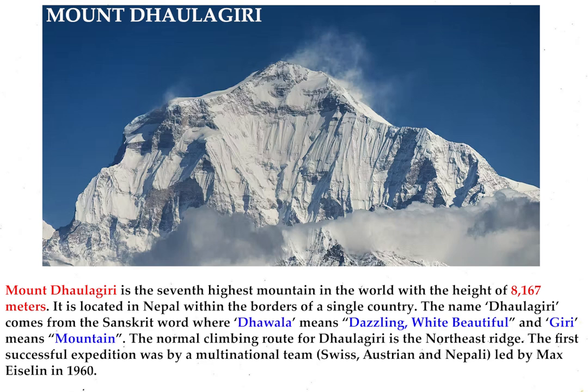Mount Dhaulagiri is the seventh highest mountain in the world, with a height of 8,167 meters. It is located entirely in Nepal, within the borders of a single country. The name Dhaulagiri comes from Sanskrit, where Dhavala means dazzling, white, and beautiful, and Giri means mountain. The normal climbing route for Dhaulagiri is the northeast ridge. The first successful expedition was by a multinational Swiss, Austrian, and Nepali team led by Max Eiselin in 1960.